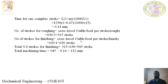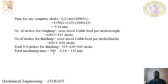For the finish cut, the crosswise feed is 1 mm per stroke, so it requires 630 divided by 1, which is 630 strokes. Total strokes required is 315 plus 630, which equals 945 strokes. Machining time per stroke is 0.14 minutes, so total machining time is 945 multiplied by 0.14, which equals 132 minutes.